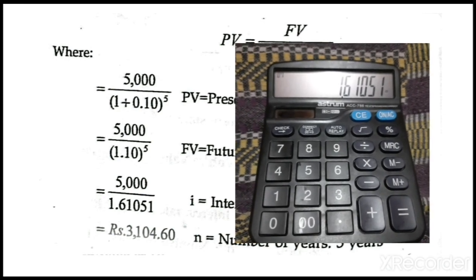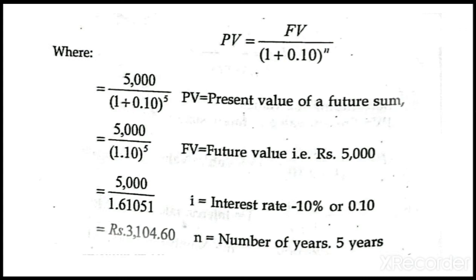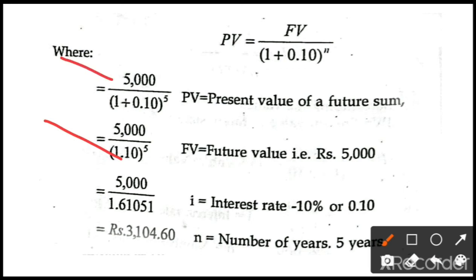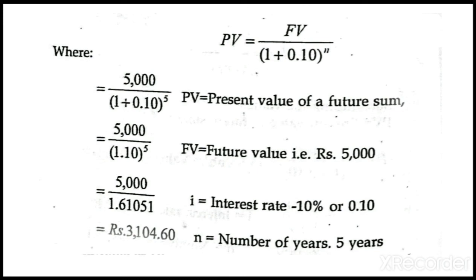This is the method for calculating present value. It is very simple: take the future value, the rate of interest, and the number of years — all given in the problem. Then apply: future value divided by (1 plus rate of interest) to the power n. If the rate is 5 percent use 0.05, if 20 percent use 0.20, and so on. I will give one more problem as homework. First we discussed simple problems; next we will discuss series problems. Thank you, we will meet in the next class.